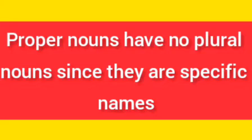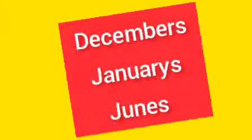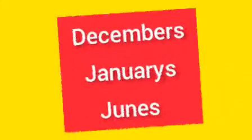Proper nouns have no plural form. Let's consider the following examples. Example 1: There is nothing like 'Januarys' or 'Junes.' All those are names given to specific months of the year; therefore, you cannot make a plural out of them.